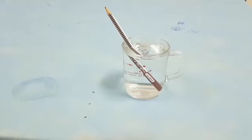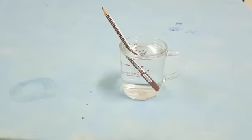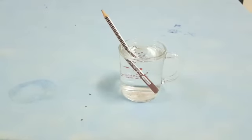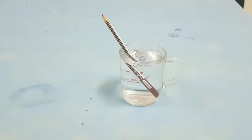If you put a pen in a glass of water and look at it from its side, you will see the pen as if it's bent and this happens due to the refraction of light.